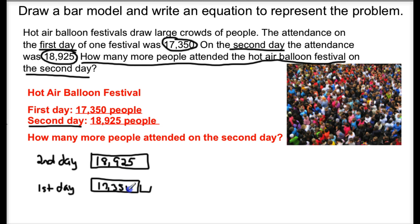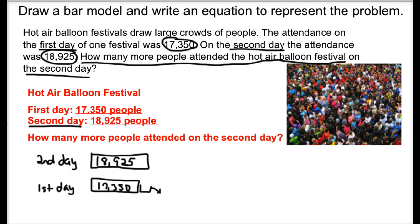What we needed to decide was: what is that missing piece, and how do we go about finding it? When looking at this word problem, I know that 'how many more people' tells me that I should be subtracting.